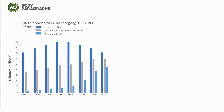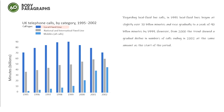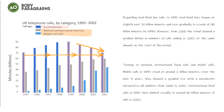Furthermore, this is the body paragraph example with a band score of 6.0: 'Regarding local fixed line calls, in 1995 local fixed lines began at slightly over 70 billion minutes and rose gradually to a peak of 90 billion minutes by 1999. However, from 2000, the trend showed a gradual decline in numbers of calls, ending in 2002 at the same amount as the start of the period.' Turning to national, international fixed calls and mobile calls...